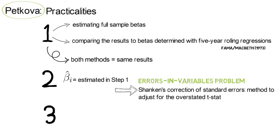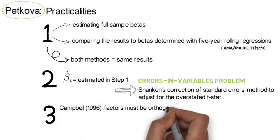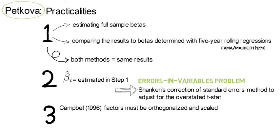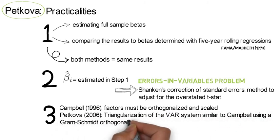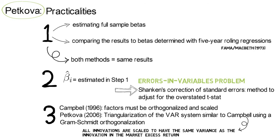And the third practicality is with regard to the estimates of the vector autoregressive system. Now, Campbell in 1996 emphasizes that it's hard to interpret estimation results for a vector autoregressive factor model unless the factors are orthogonalized and scaled. And Petkova follows that approach, so she triangularizes the vector autoregressive system similar to the suggestion in Campbell 1996. Methodology-wise, she relies on the Gram-Schmidt orthogonalization. And also, as in Campbell 1996, all innovations are scaled to have the same variance as the innovation in the market excess return.